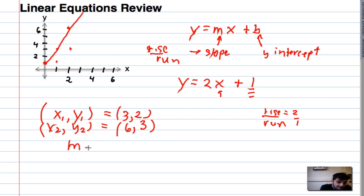Well then, to get the slope m, that's going to be y2 minus y1 divided by x2 minus x1. And in this case, we're actually going to take 3 minus 2 over 6 minus 3, and that actually ends up being 1 over 3, which is 1 third.